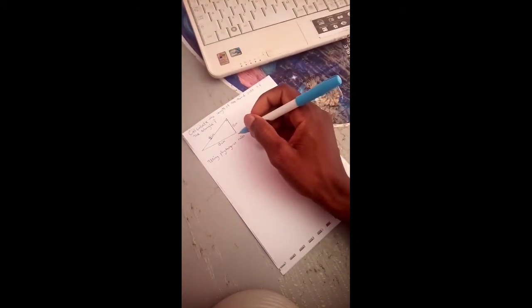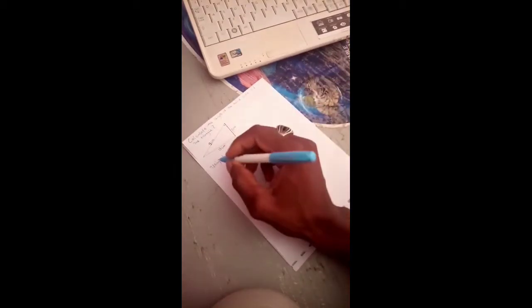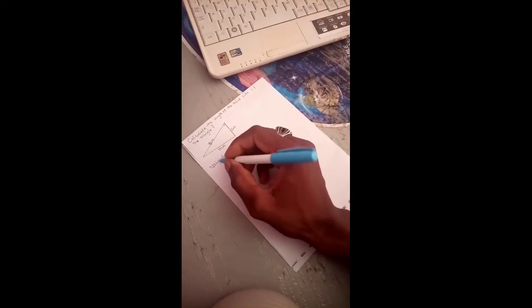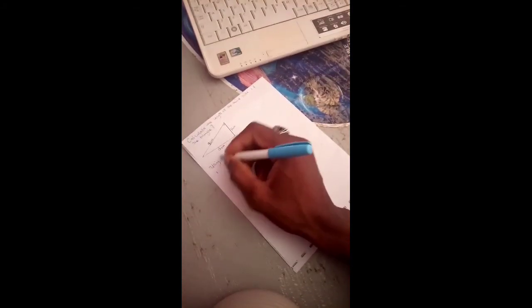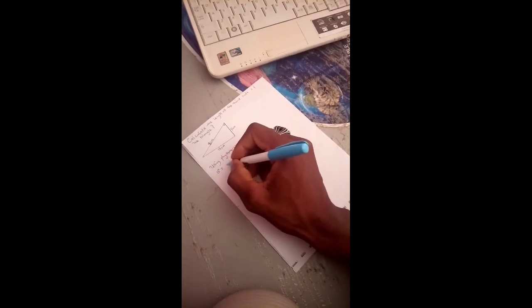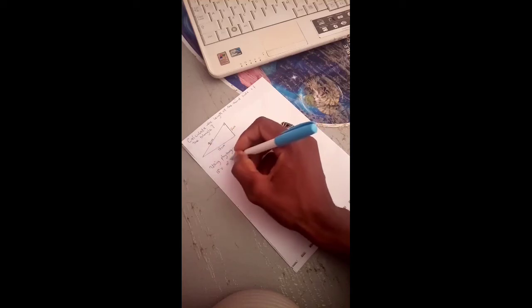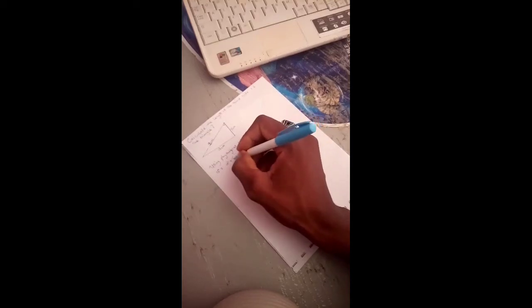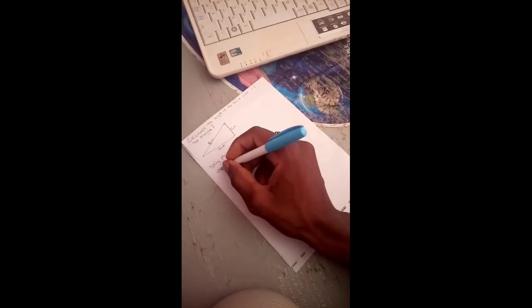We are going to start. 13 squared is equals to a squared plus 5 squared. So 13 squared is the same thing as 13 times 13.